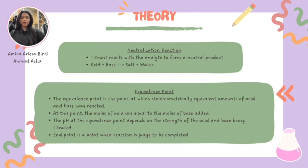The pH at the equivalence point depends on the strength of the acid and base being titrated. To visually detect the equivalence point, we often use indicators, which are substances that change color at a specific pH range. The point when the indicator changes color is called the endpoint. Ideally, the endpoint and the equivalence point should coincide, but they may differ slightly depending on the indicator used.